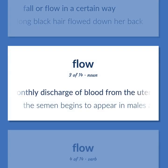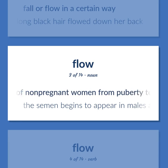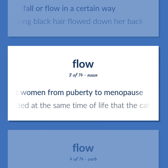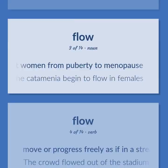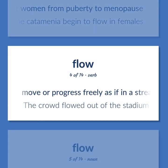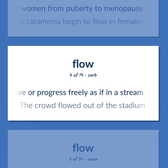The monthly discharge of blood from the uterus of non-pregnant women from puberty to menopause. The semen begins to appear in males and to be emitted at the same time of life that the catamenia begin to flow in females. Move or progress freely as if in a stream. The crowd flowed out of the stadium.